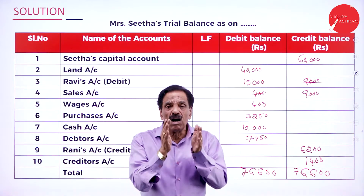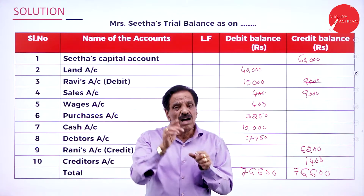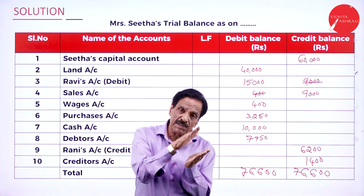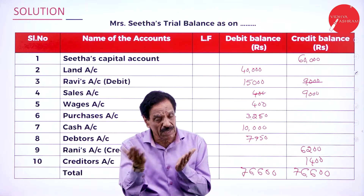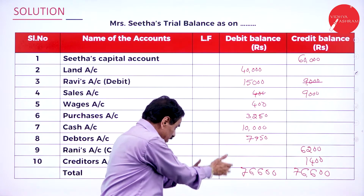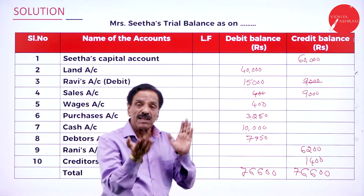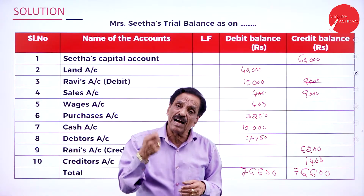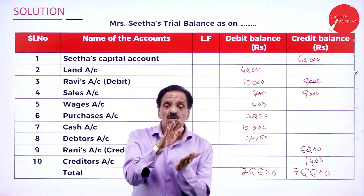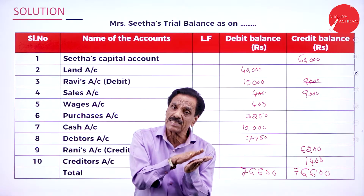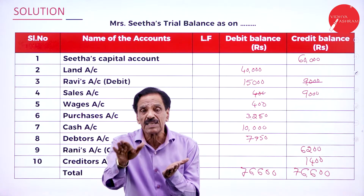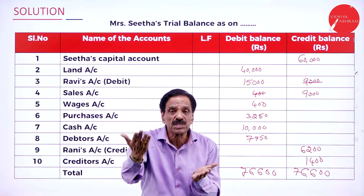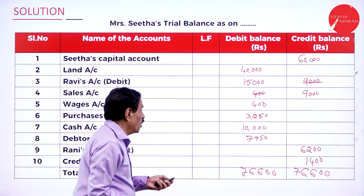Debit side shows all assets and expenses; credit side shows incomes and liabilities. All assets on the debit side, all liabilities on the credit side, all expenses on the debit side, all income on the credit side. Ledger balances are transferred to the trial balance; trial balance shows arithmetical accuracy of books of account.